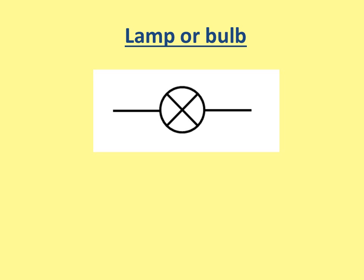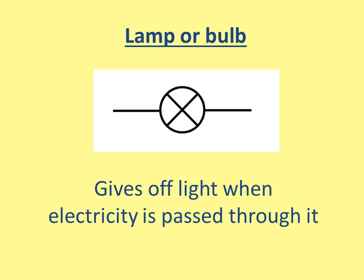Lamp or bulb — this gives off light when electricity passes through it. As energy goes through the light bulb, the energy is taken from the electron and given to the light bulb, and the energy is transferred into light.